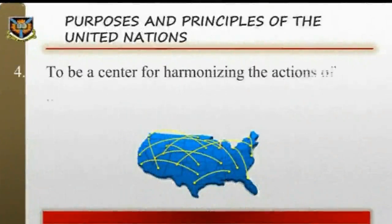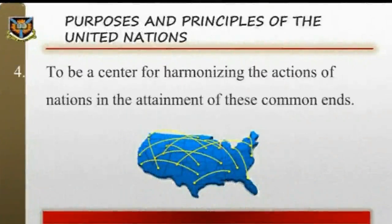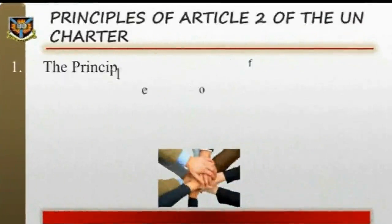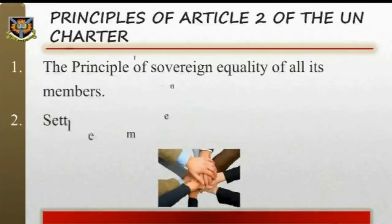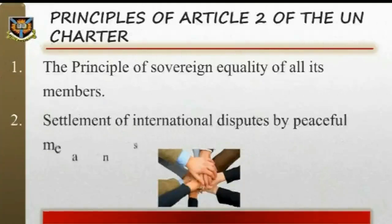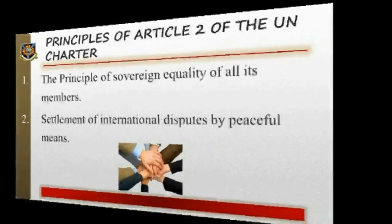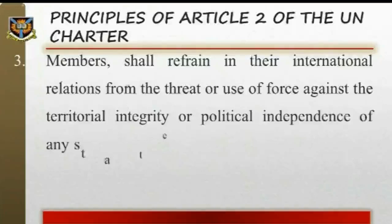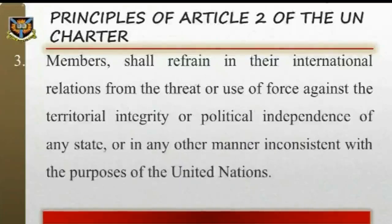4. To be a centre for harmonising the actions of nations in the attainment of these common ends. To achieve the stated aims, Article 2 of the Charter sets forth some principles: 1. The principle of the sovereign equality of all its members. 2. Settlement of international disputes by peaceful means, in such a manner that international peace, security, and justice are not endangered. 3. Members shall refrain in their international relations from the threat or use of force against the territorial integrity or political independence of any state, or in any other manner inconsistent with the purposes of the United Nations.